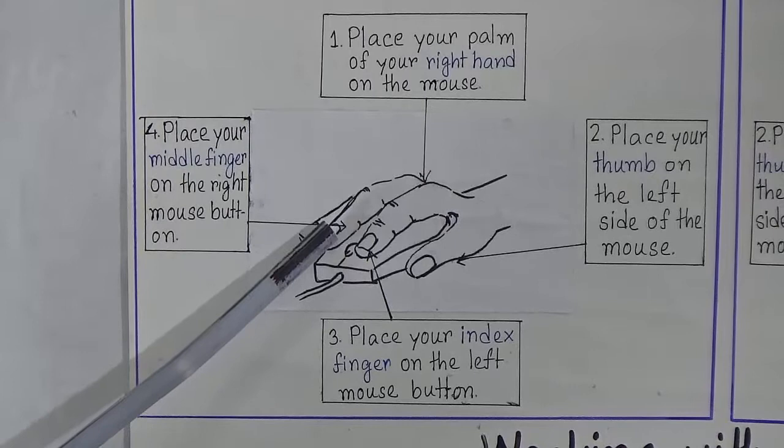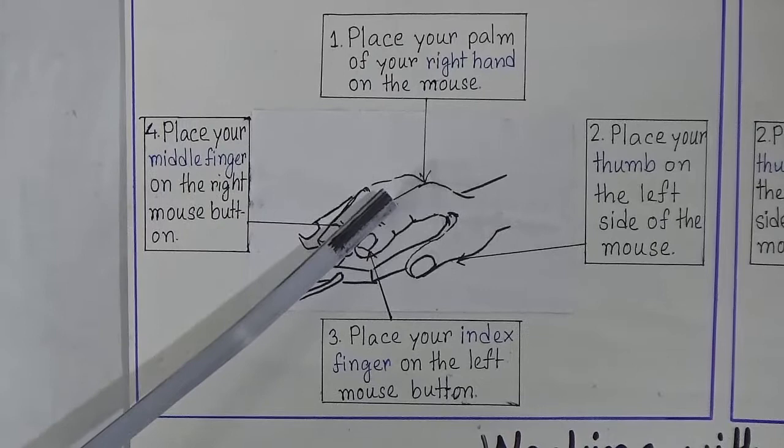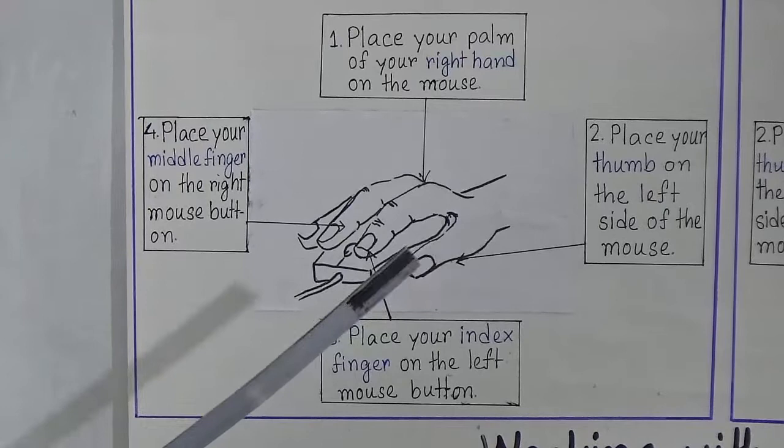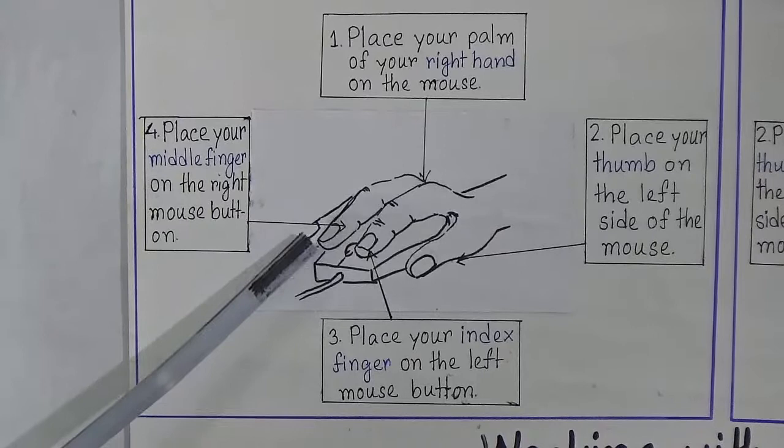To recap the right-handed steps: first, place the palm of your right hand on the mouse. Then place your thumb on the left side of the mouse. Then place your index finger on the left mouse button. The last step is to place your middle finger on the right mouse button.